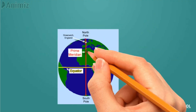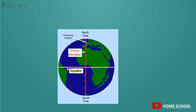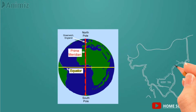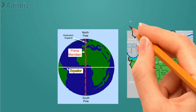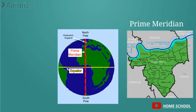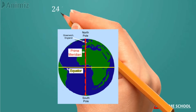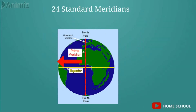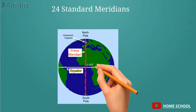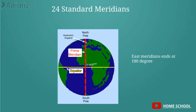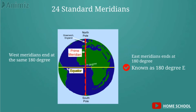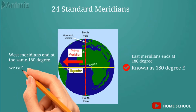We have already learned that the prime meridian is at zero degree longitude, which passes through Greenwich, England. Greenwich is a village in England and the prime meridian passes through this village. There are 24 standard meridians — 12 on the west side and 12 on the east side of the prime meridian. Starting from zero degree, the east meridians end at 180 degree east, and the west meridians end at 180 degree west.